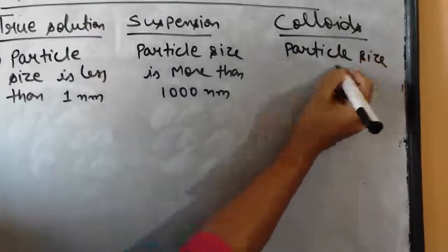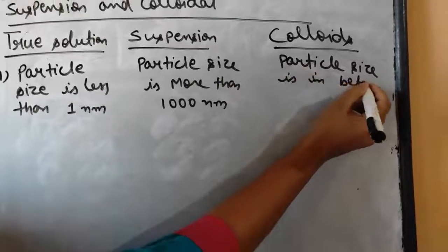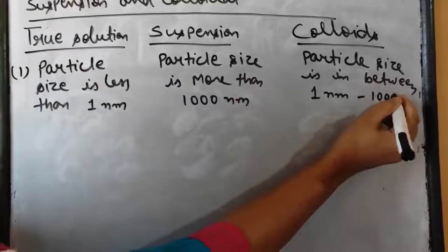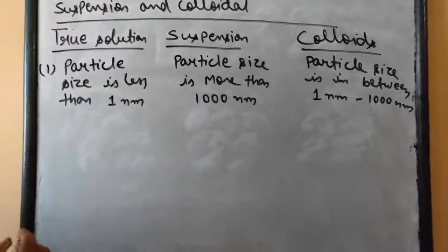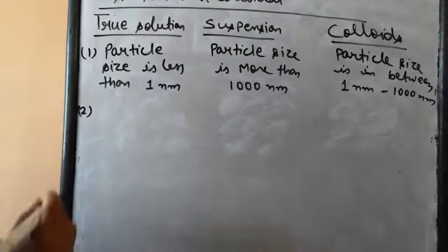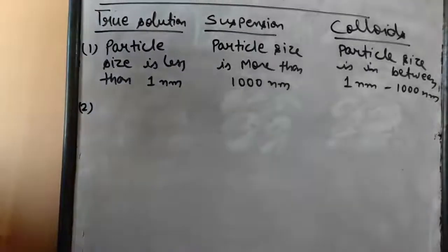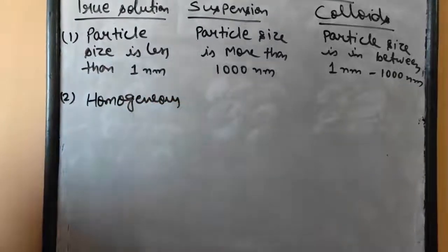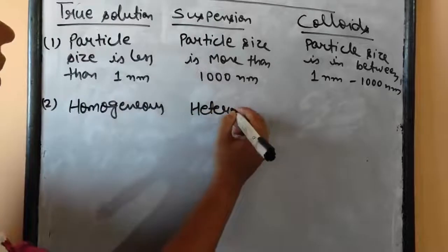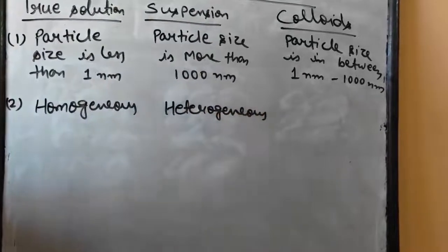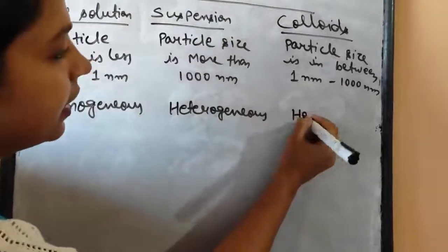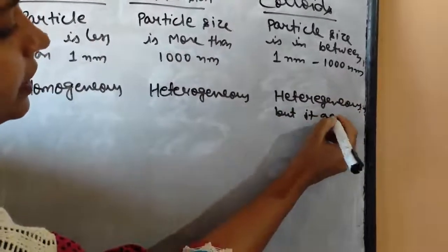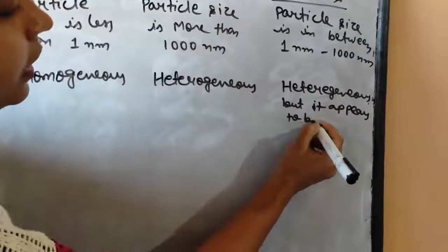Now let's have a look on the second point of difference: homogeneous or heterogeneous. True solution, all of you know, is homogeneous in nature. Suspension is heterogeneous in nature. And colloids are heterogeneous but appear to be homogeneous.